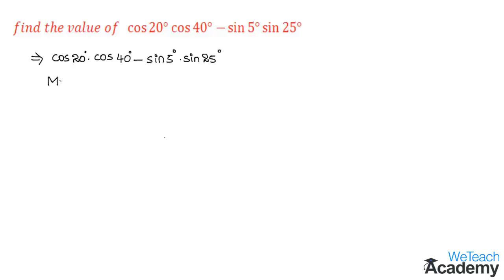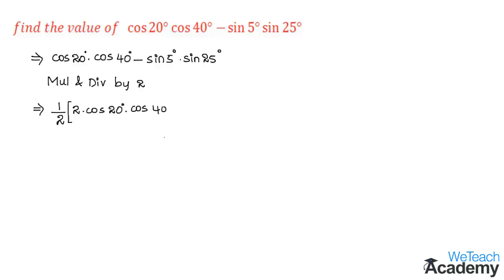Now let us multiply and divide both the terms by 2. By doing so we get (1/2) × [2 cos 20° × cos 40° − 2 sin 5° × sin 25°].